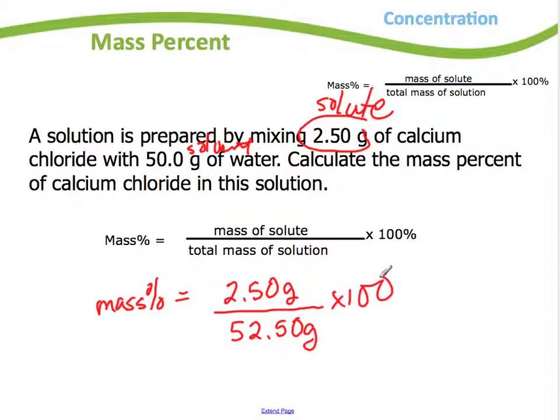Then just grab your trusty calculator. So 2.5 divided by 52.50 equals times by 100. So that would be equal to 4.7619%. Typically we'd want to use sig figs in this case. So in the question I used 3, so I'll give 3 sig figs here too as well. So 4.76%. So that would be the mass percent of that particular solution.